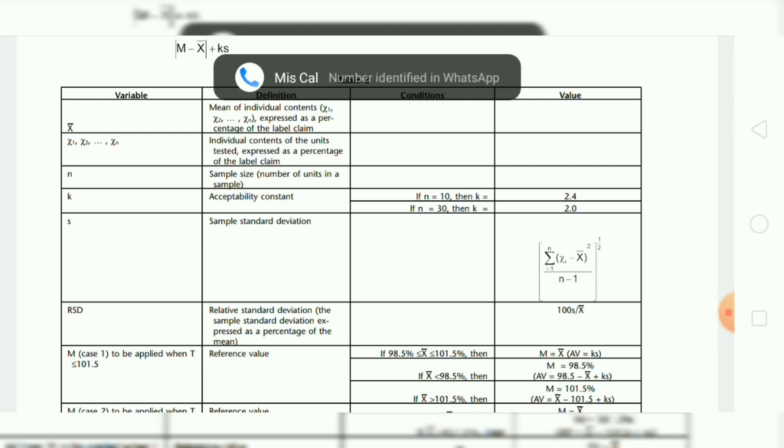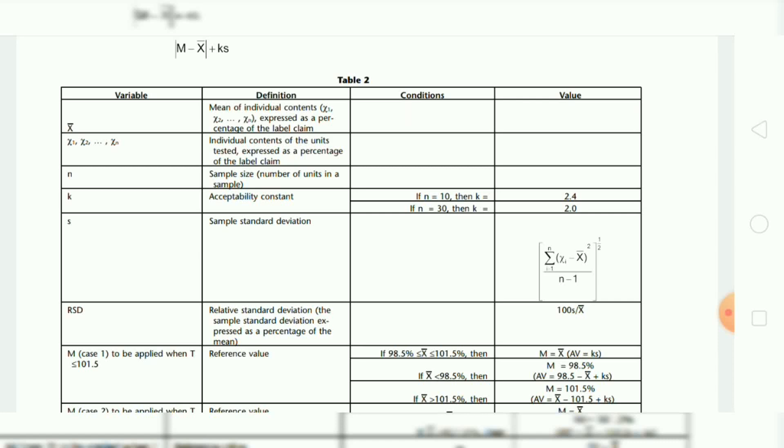When n is equal to 10, k is equal to 2.4. When n is equal to 30, k is equal to 2.0. s is equal to the sample standard deviation.